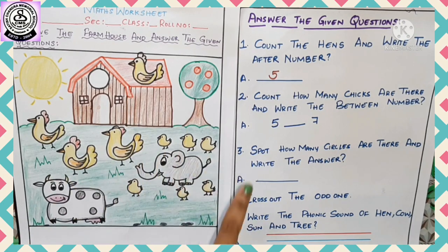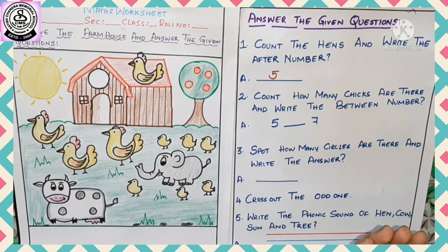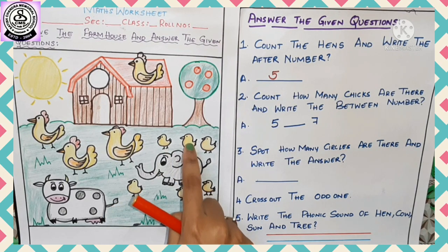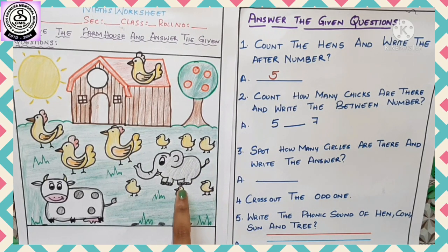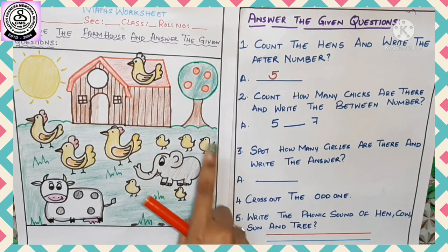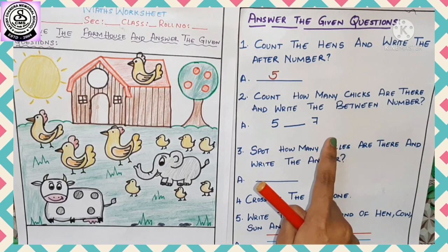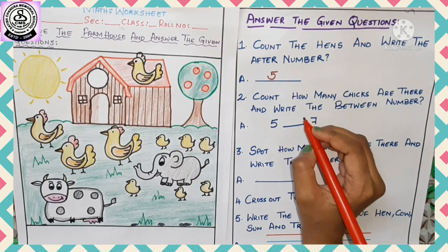First we need to count the chicks, then write the answer. Search here — where are the chicks? Can you find them? Yes, over here! Now let's count: one, two, three, four, five, and six — total six chicks. What is the between number of five and seven? Yes, six! So the between number is six. How many chicks are there? Six.